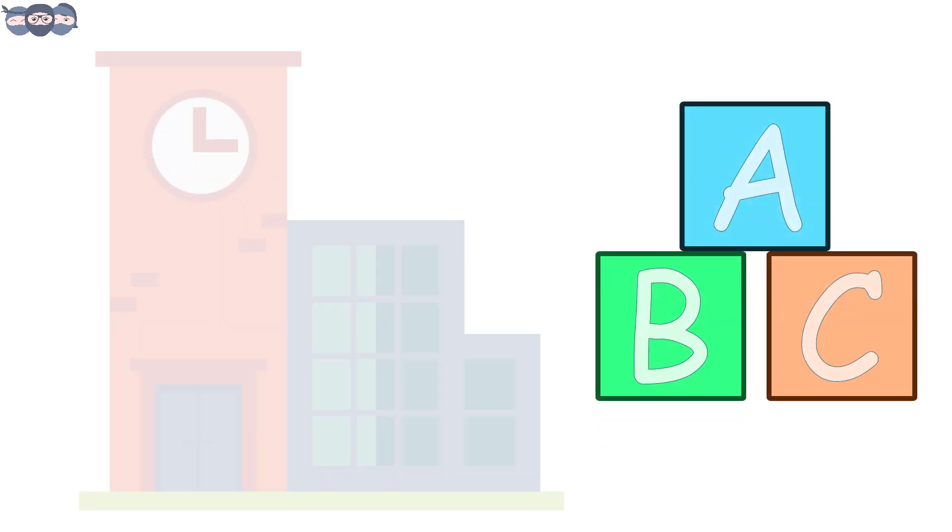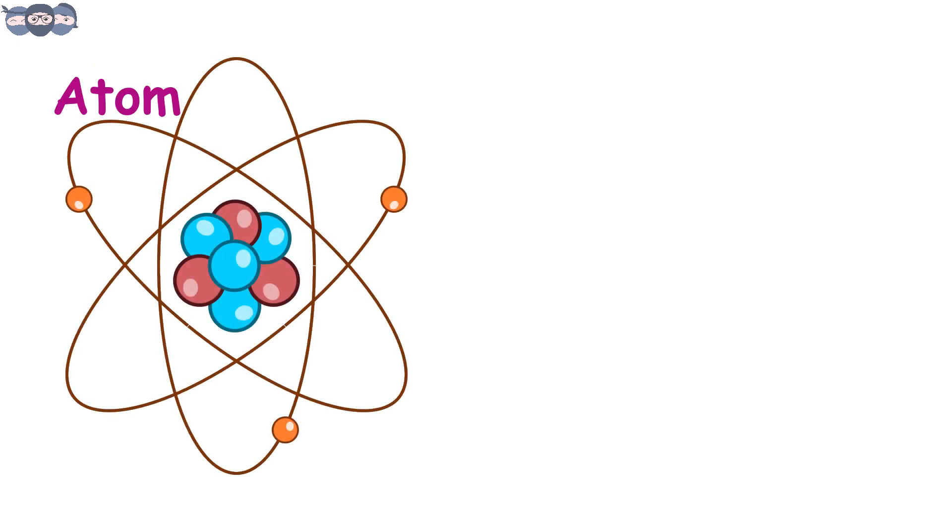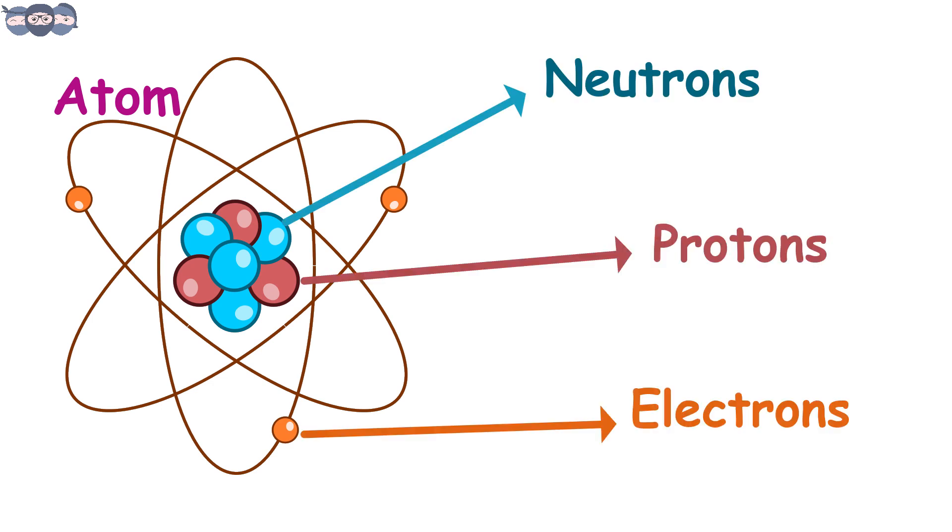Let us start from the basics that we have studied in schools. We know that any atom is made up of neutrons, protons, and electrons.